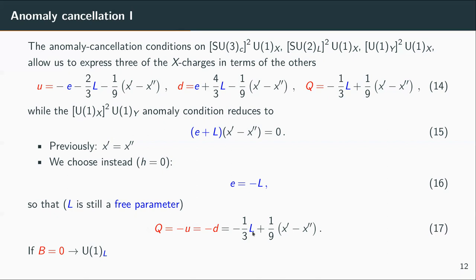The only free parameter from the Standard Model charges is the charge of the lepton doublet. With this relation it is very straightforward to have, for example, a gauge baryon symmetry — in that case the charge of the lepton doublet is zero, automatically the right-handed charge is also zero, and the scalar masses are different from zero. Conversely, we can also have a lepton symmetry if we impose that the quark charges are zero, but this imposes additional conditions that are more difficult to satisfy.